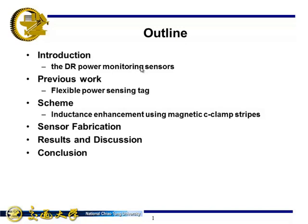First, I will introduce the Demand Response power monitoring sensors and start from our previous work, a flexible power sensor tag for the current detection of household two-wire applications. Then we will move to the scheme of the Magnetic C-clamp Stripes and how to embed in the current sensor tag, then the fabrication process and measurement results and discussion, and conclusion.